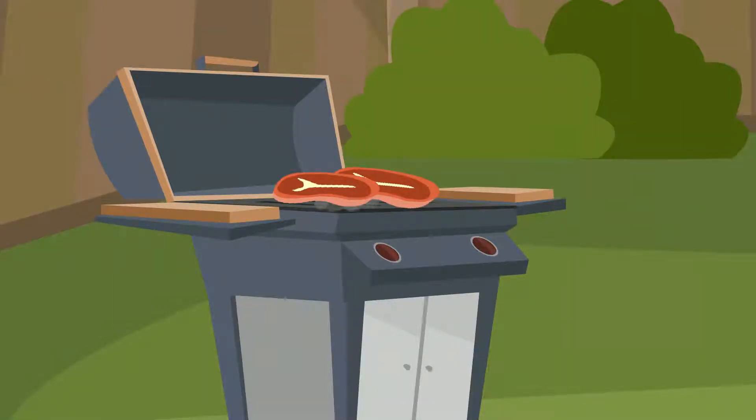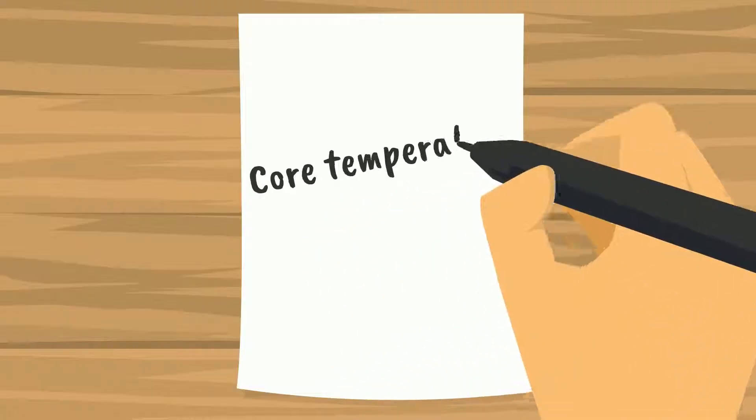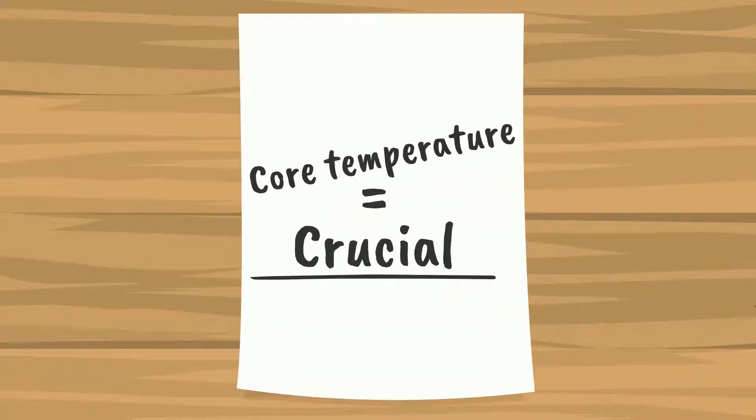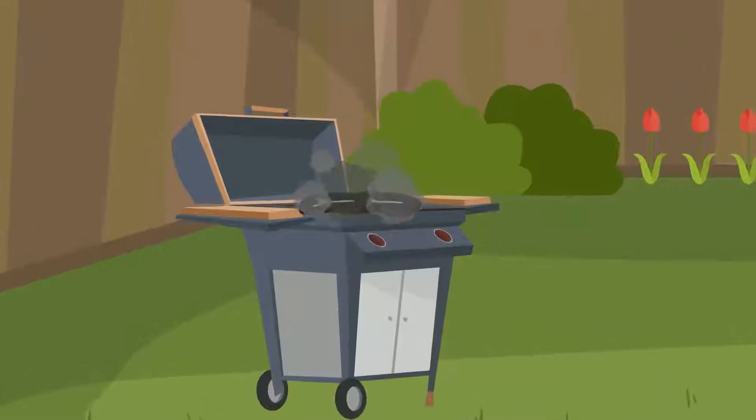When meat is cooked, the results can vary a lot. For the best result, it is crucial to control the meat's core temperature. This decides the condition of the meat. A wrong core temperature equals a sub-optimal steak.